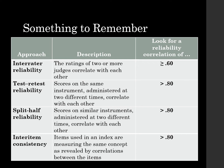For test-retest reliability, where scores on the same instrument administered at two different times correlate with each other, we want a reliability correlation of 0.8 or better. The same threshold follows for split-half reliability and inter-item reliability — we want each of those to show a reliability correlation of 0.8 or better.